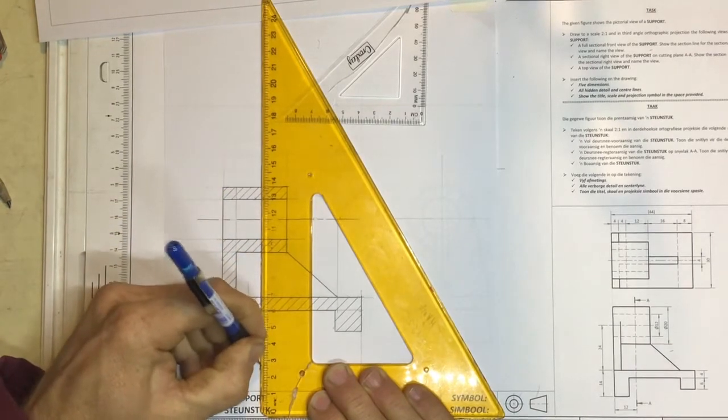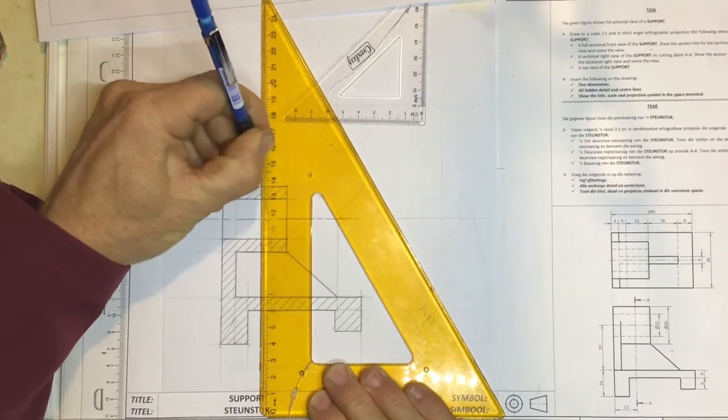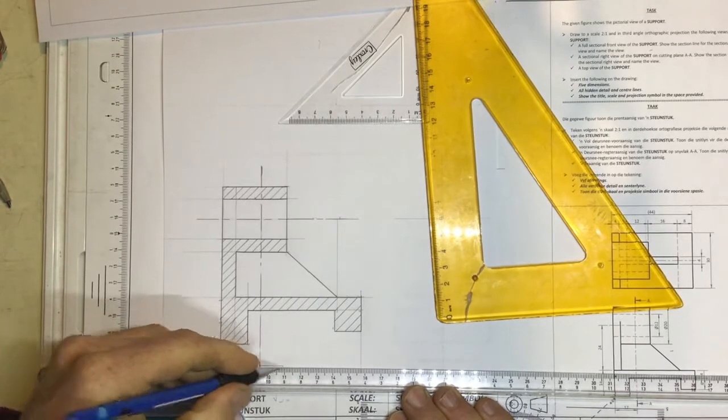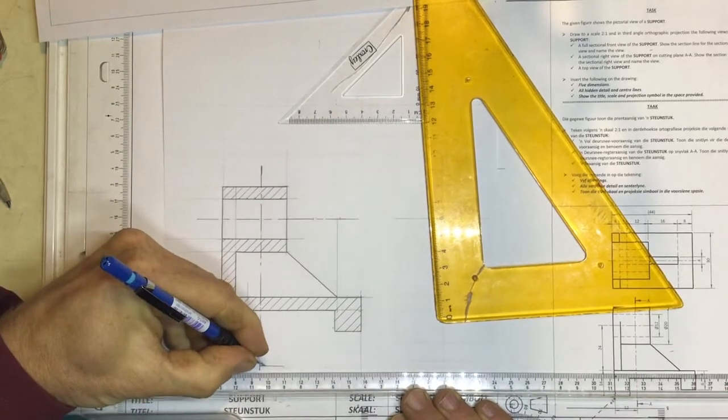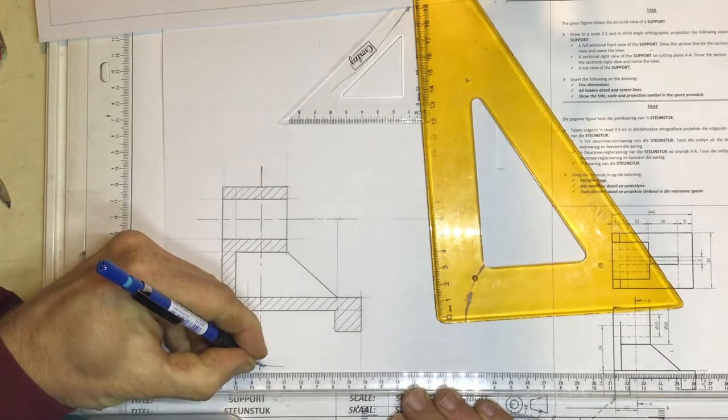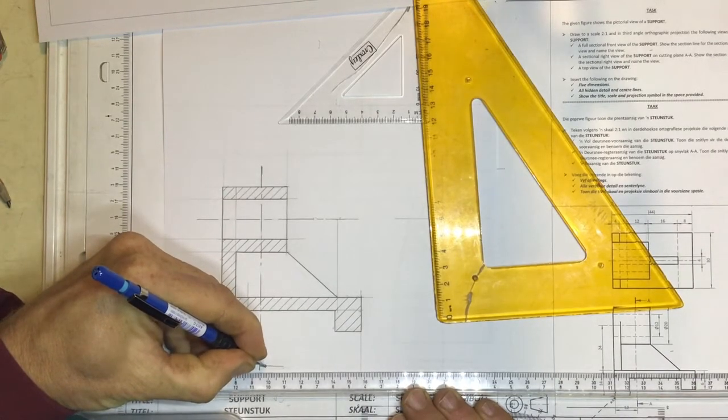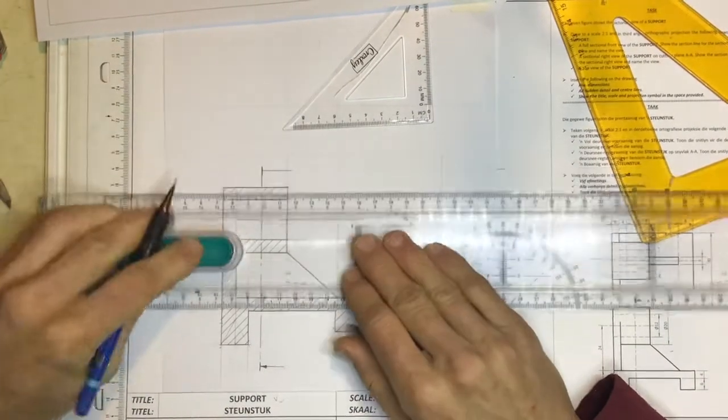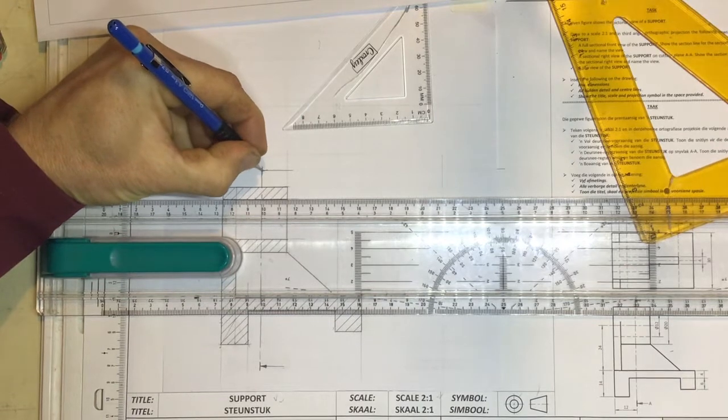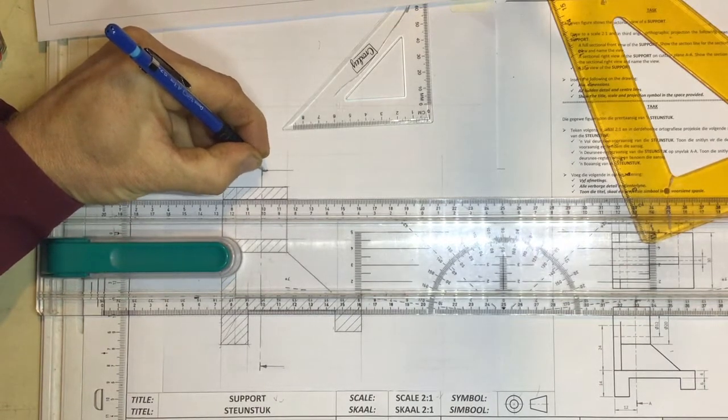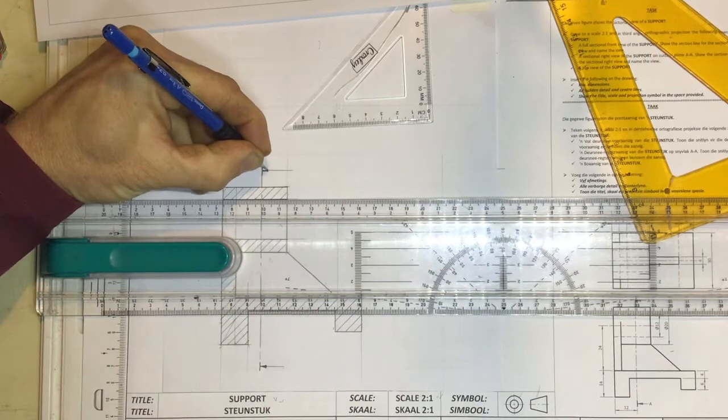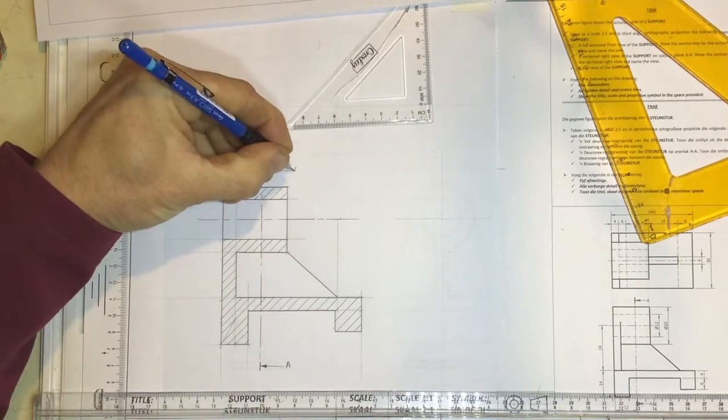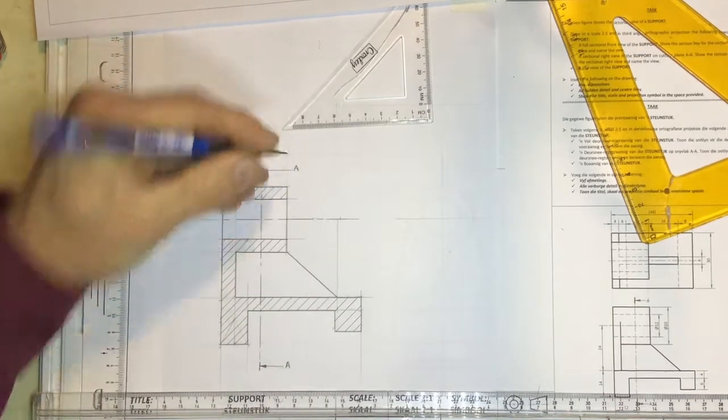Remember to thicken in the end of that line, thicken in the end of that line. And then you can draw in your arrows. Quite longish arrows over here. They're not dimensioning arrows. They are for the section line. You can make them a little bit bigger than your normal dimensioning arrows. Try and make them a little bit bigger. And you can label that as AA, just as they've done on their drawing over there.